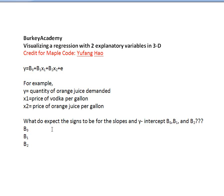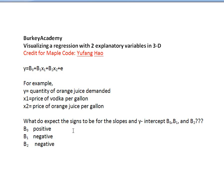The y-intercept tells us how much orange juice somebody might want to buy if both explanatory variables were zero — that is, if we plug in zero for both prices, all we're left with is the y-intercept. We'd expect it to be positive, because if orange juice and vodka are both free, people are going to want a lot of orange juice. The slope on vodka should be negative because it's a complement — if the price of vodka goes up, people want less orange juice too. And by the law of demand, if the price of orange juice goes up, people buy less orange juice, so that slope should also be negative.